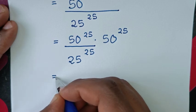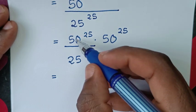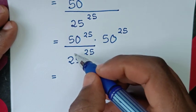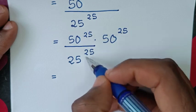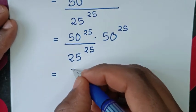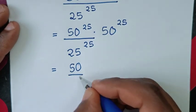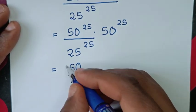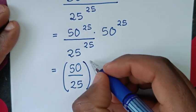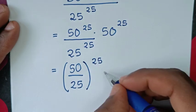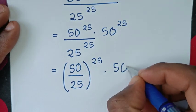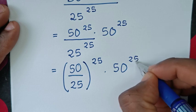In the next step, we apply division of exponents with different bases but the same power of 25. So it will be this base over this base: 50 over 25, bracket to the power of 25, then times 50 power of 25.